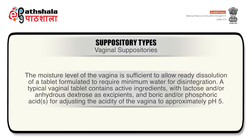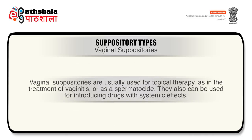The moisture level of the vagina is sufficient to allow ready dissolution of a tablet formulated to require minimum water for disintegration. A typical vaginal tablet contains active ingredients with lactose and/or anhydrous dextrose as excipients, and boric acid or phosphoric acid for adjusting the acidity of the vagina to approximately pH 5.